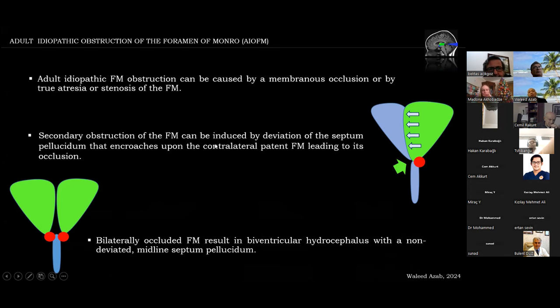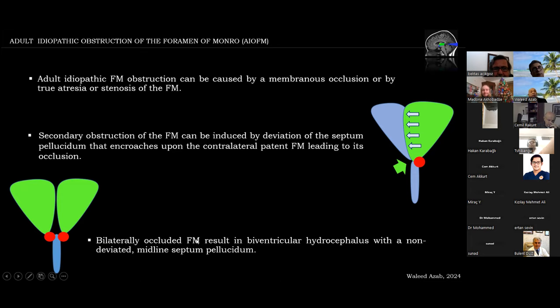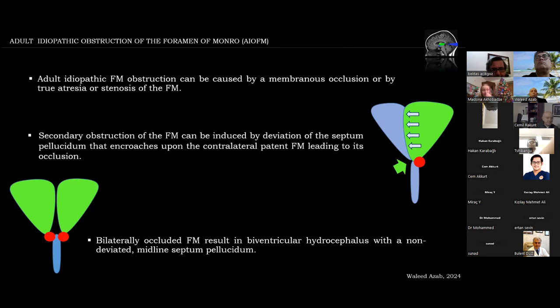At times there is bilateral occlusion resulting in biventricular hydrocephalus with non-deviated midline septum pellucidum and normal-sized third ventricle, as in the images of a case we treated: a 21-year-old female who presented with a Glasgow Coma Scale of 13 out of 15 and a history of intermittent high ICP for a couple of months. An EVD was inserted at another hospital and she regained consciousness. On MRI, the collapsed ventricle on the right side is due to the EVD that had been inserted.